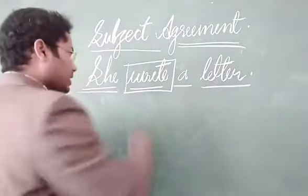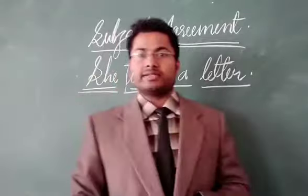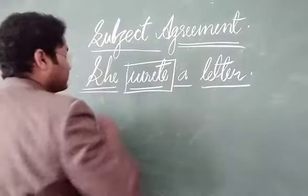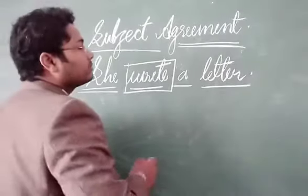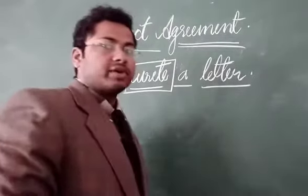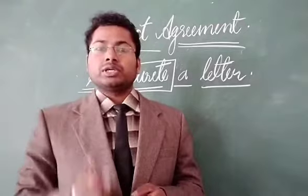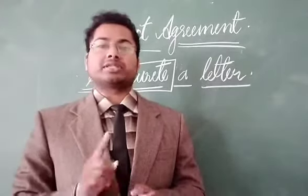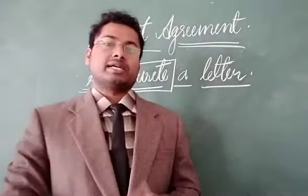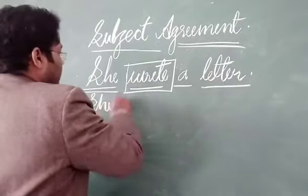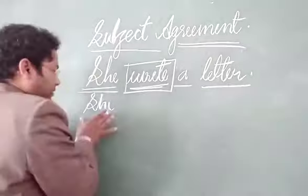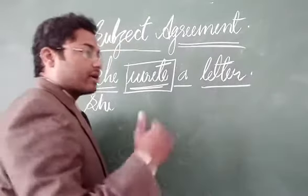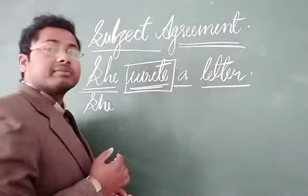She write a letter. This is a simple sentence of present indefinite tense. What is the agreement of subject with verb? In a simple sentence, we write the simple form of the main verb. When we add S or ES to the base form of the main verb, it is known as the simple form of the main verb, and it is used in present indefinite simple sentences. So 'write' will be 'writes' as per the number of the subject and the rule of present indefinite tense.